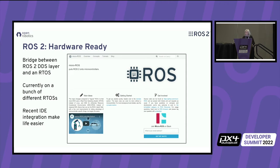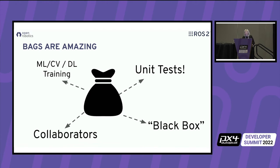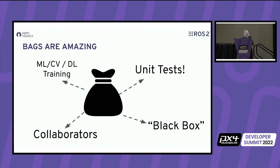ROS bags are a key feature — it's a way of dropping an entire system's worth of data into a storage file, including video and lidar data, with all the tooling to move it around, chop it up, and analyze it. I think this is one of the most powerful features of ROS: you get a built-in black box — like the flight data recorder on a plane — baked into ROS 2.